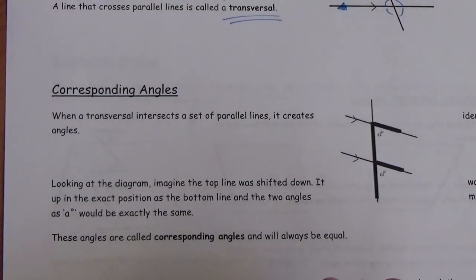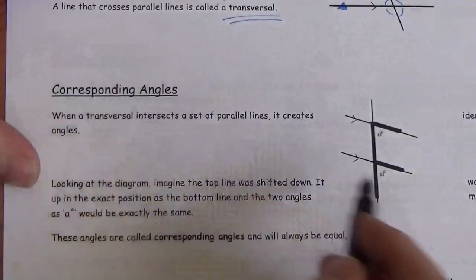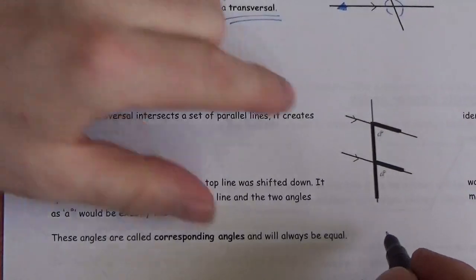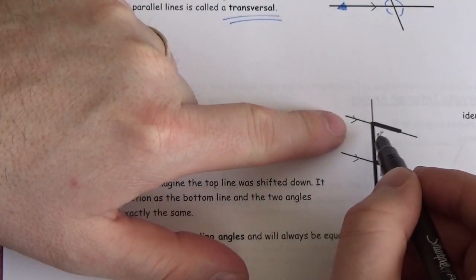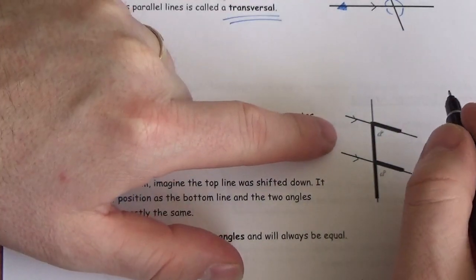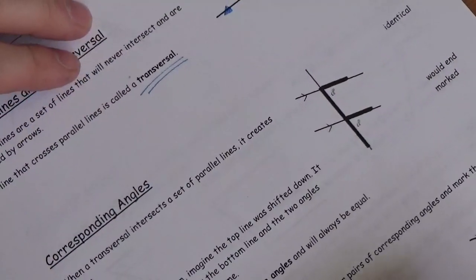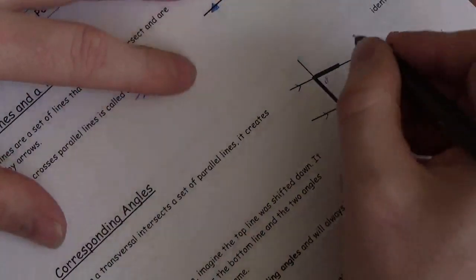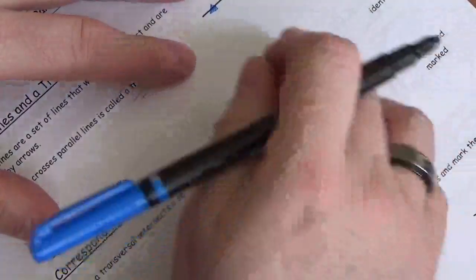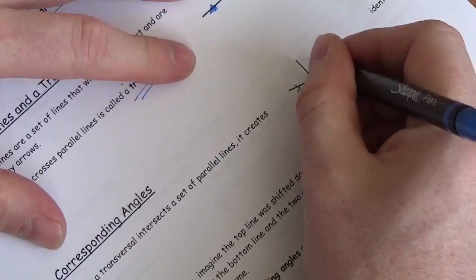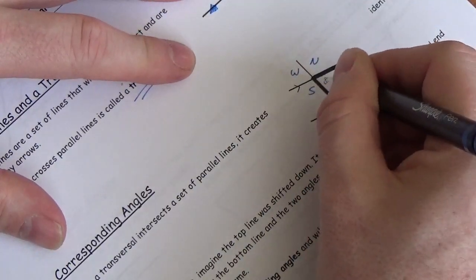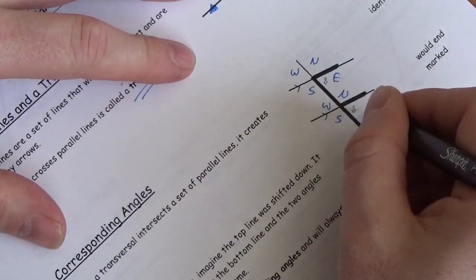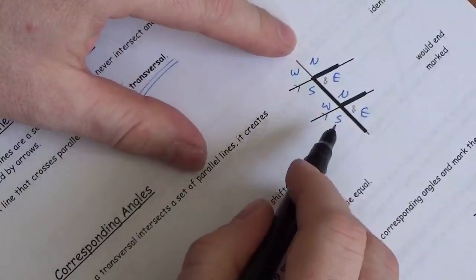The first set of angles we want to look at are what we call corresponding angles. Here are our two parallel lines and our transversal going through them. You've got these sets of four angles at each intersection. If you think of it as a compass — when that transversal cuts the parallel lines, I've got a north, south, west, east scenario at each point of intersection.